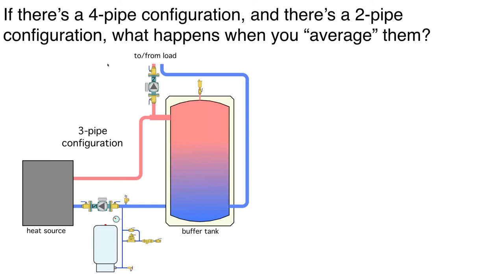Now, if there's a four-pipe configuration and there's a two-pipe configuration, what do you get when you average them? If you average four and two, you get three. So here's a three-pipe buffer.